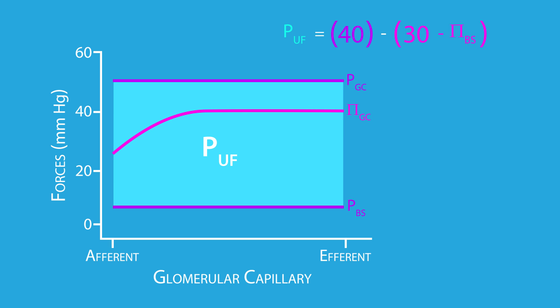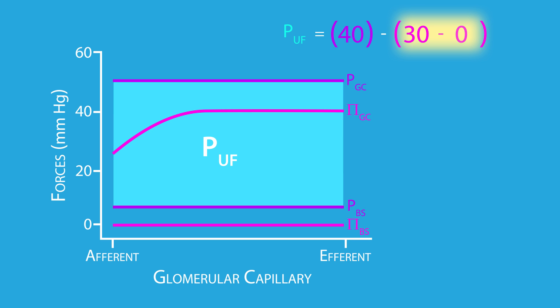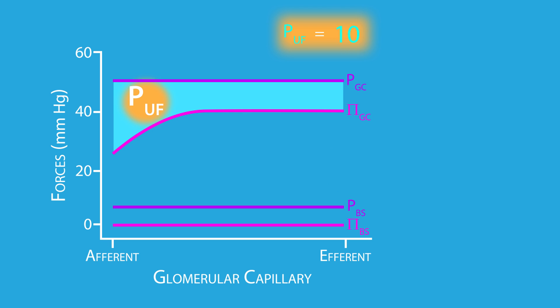Finally, the Bowman space colloid osmotic pressure is normally zero because plasma proteins are not normally found within the Bowman space since they are not filtered. So if we subtract the net colloid osmotic pressure of 30 millimeters of mercury from the net hydrostatic pressure of 40 millimeters of mercury, we are left with a net ultrafiltration pressure of about 10 millimeters of mercury. It's important to note that this pressure is not uniform across the length of the glomerular capillary.